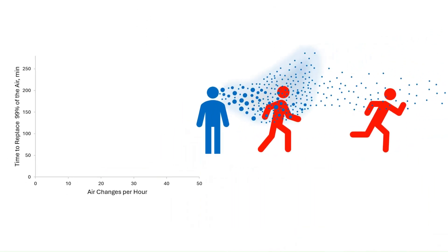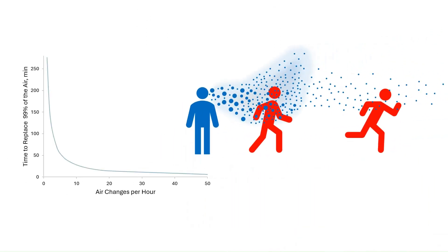In terms of airborne disease transmission, what really matters is the time it takes for a significant proportion of the air to be physically replaced by fresh air. The relationship between ACH and the time taken to replace 99% of the air in the room is shown here. You'll note that the relationship is not linear.